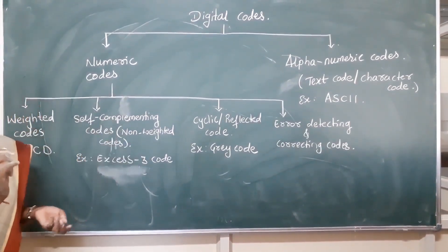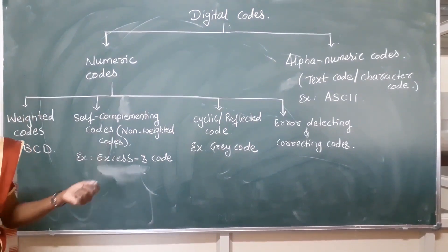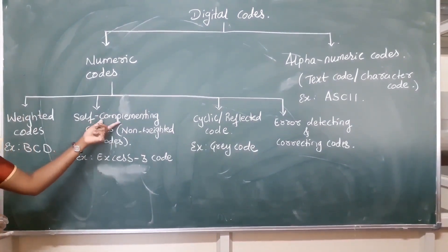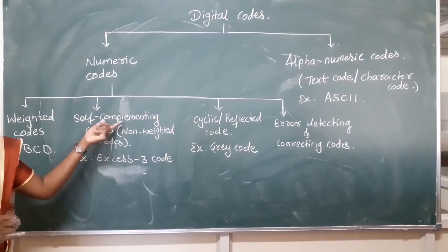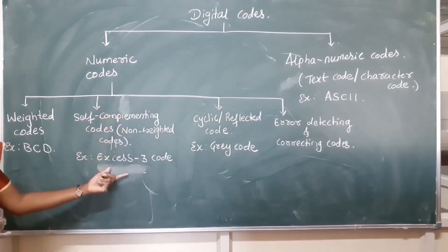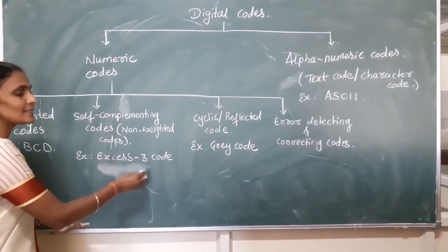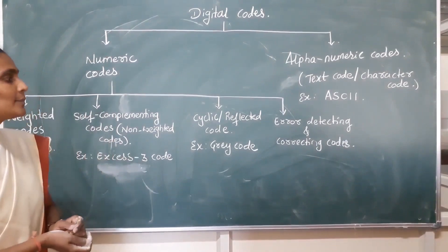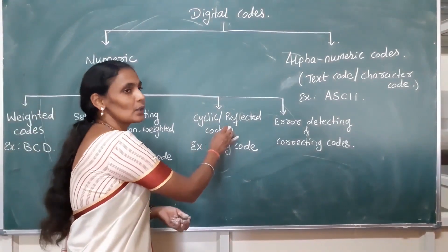It does not have any value for the positions of each digit, but they are self-complementing in nature. The example for self-complementing code is Excess-3 code. Next comes cyclic or deflected code.